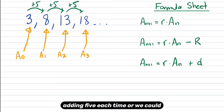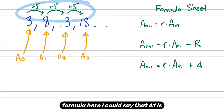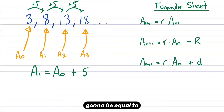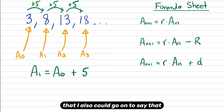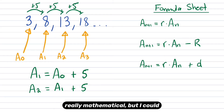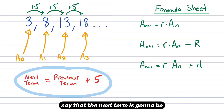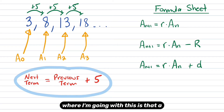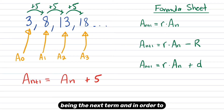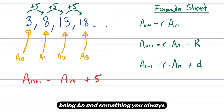It's easy to see we're adding five each time, or we could say we're adding five to each term. So I could say that a1 is going to be equal to a0 plus five, and a2 is going to be equal to a1 plus five. The next term is going to be equal to the previous term plus five. So a subscript n plus one — just think of that as being the next term — and in order to find the next term, we need to know the previous term, a(n).